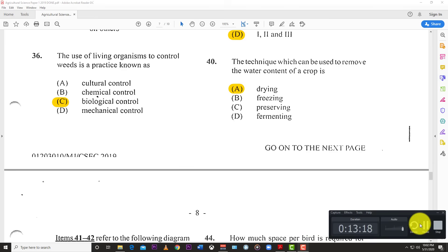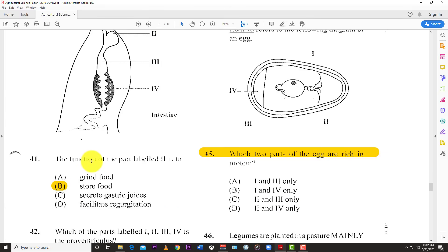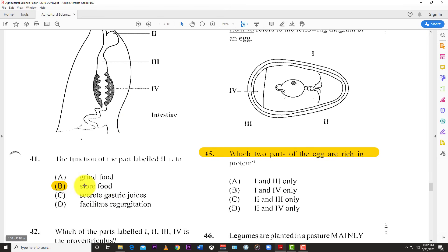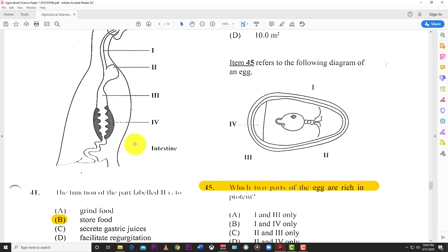Numbers 41-42 refer to the diagram showing parts of the digestive tract of a poultry bird. Number 41: The function of the part labeled 2 is to store food - that's the crop. Number 42: Which part labeled 1, 2, 3, or 4 is the proventriculus? That's number 3. You have the esophagus, the crop, proventriculus, and gizzard.